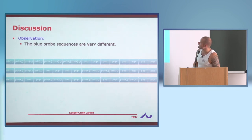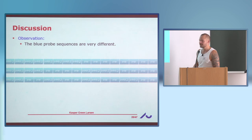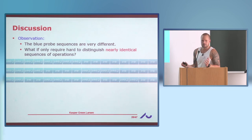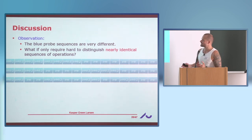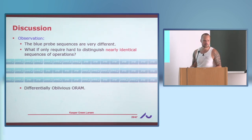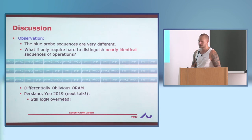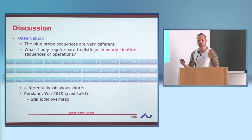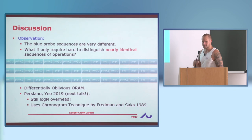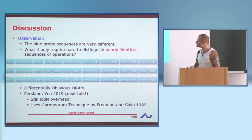Another discussion: in this hard distribution the random sequences are very different from one another. What if you only require security guarantees for nearly identical sequences of operations? That's basically what's called differentially oblivious ORAM. There will also be a talk later today showing you can still prove a log N lower bound even for differentially oblivious ORAMs. That result uses a different technique — not the information transfer technique, but the chronogram technique by Fredman and Saks, also from data structure lower bounds.